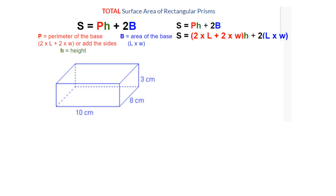Capital P stands for perimeter of the base, H stands for height, and capital B stands for area of the base. Let's get started.